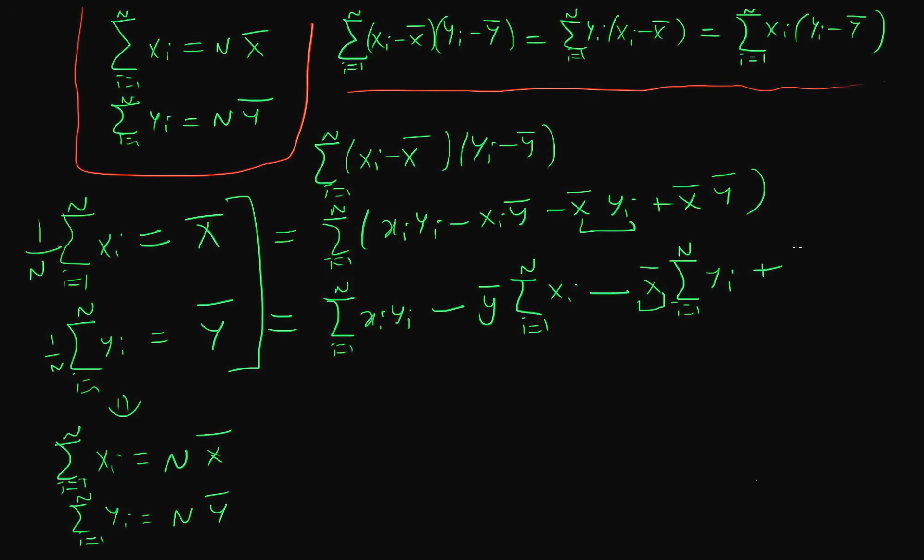Then finally, this last term in our sum has no i dependence at all. So I can actually take x bar and y bar outside here and I'm just left with the sum of 1. Some of this stuff looks similar to the things we derived at the top left. The sum of xi we know is just n times the mean of x. The sum of yi is just n times the mean of y. So I can use this to rewrite this expression slightly simpler.